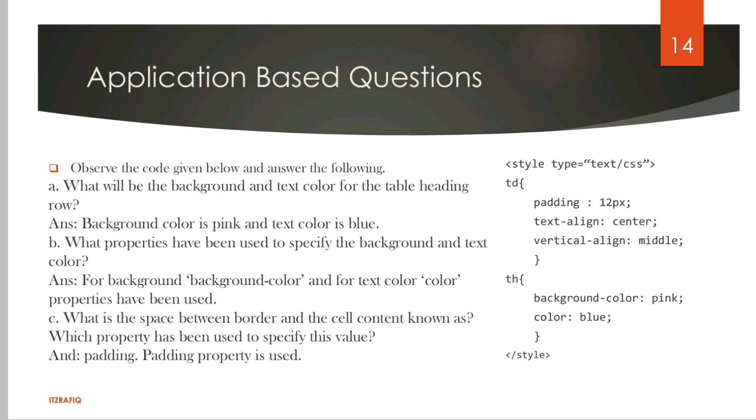One more application question. Here we have two selectors: TD and TH. Inside TD we have padding, text-align, vertical-align. Inside TH we have background-color and color. Color will change the text color, background-color will change the background. What will be the background and text color of the table heading row? Background color is pink and text color is blue. What properties have been used to specify background and text color? For background, background-color property; for text, color property. What is the space between border and cell known as? It is padding. Which property is used? Padding property.